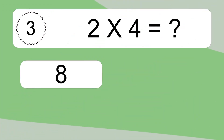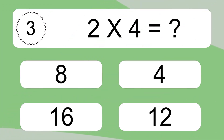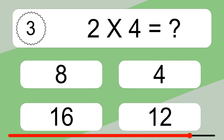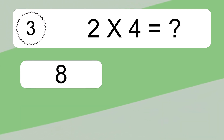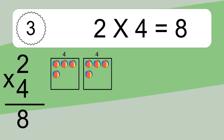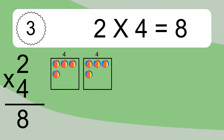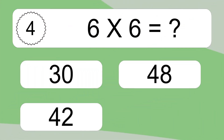2 times 4 equals what? 2 times 4 equals 8. We have 2 boxes and each box has 4 colorful balls inside. If you count all the balls in all the boxes together, you will have 2 times 4 balls. This equals 8 balls.